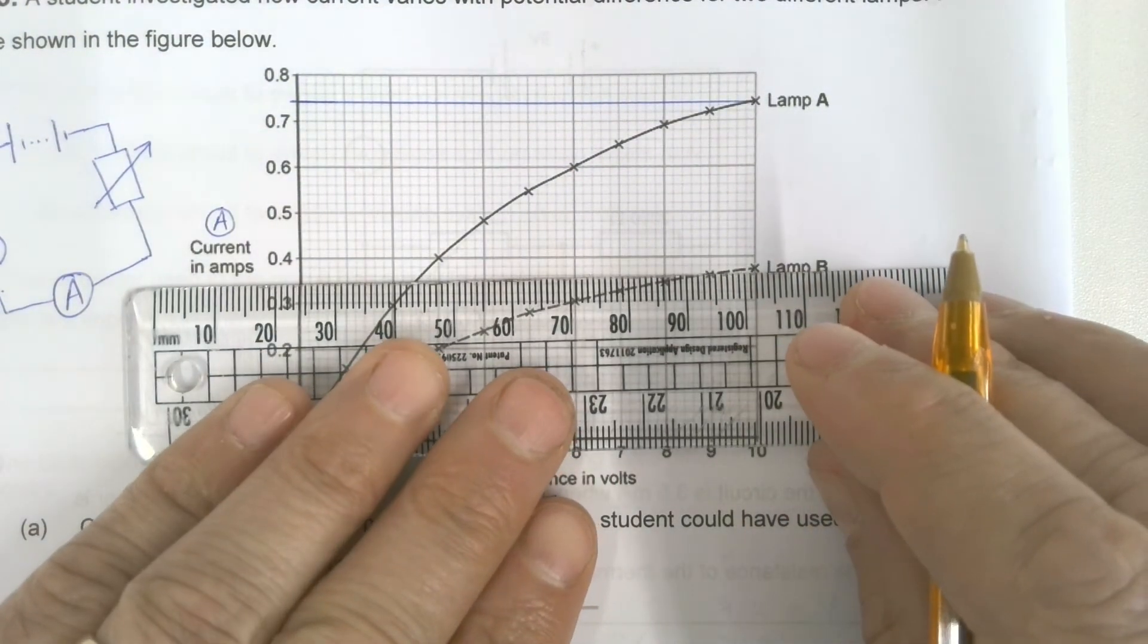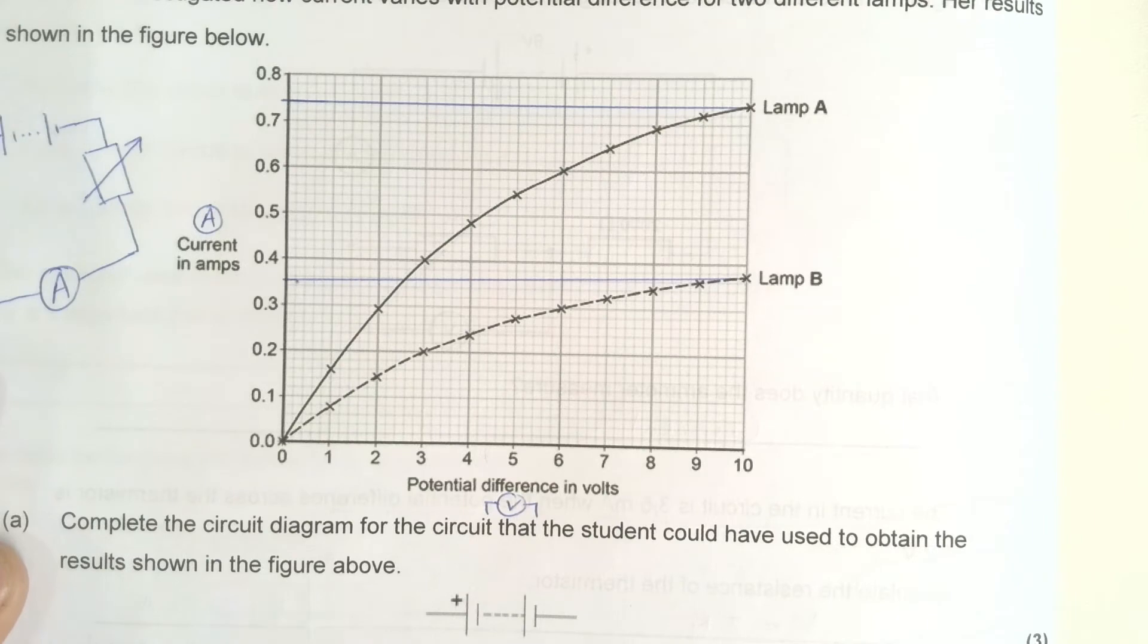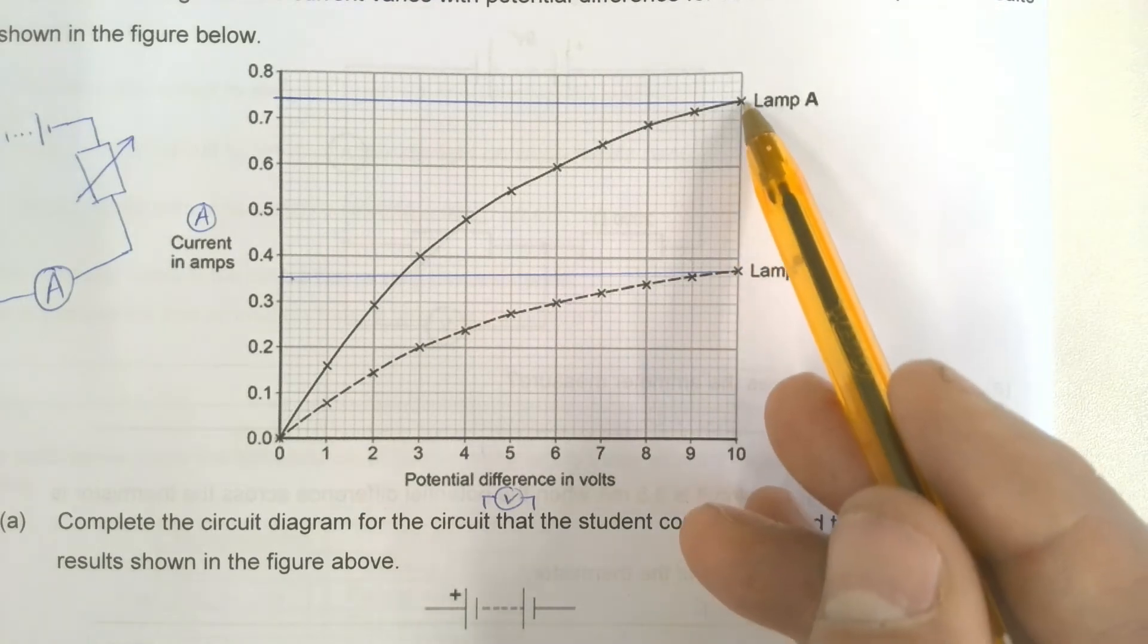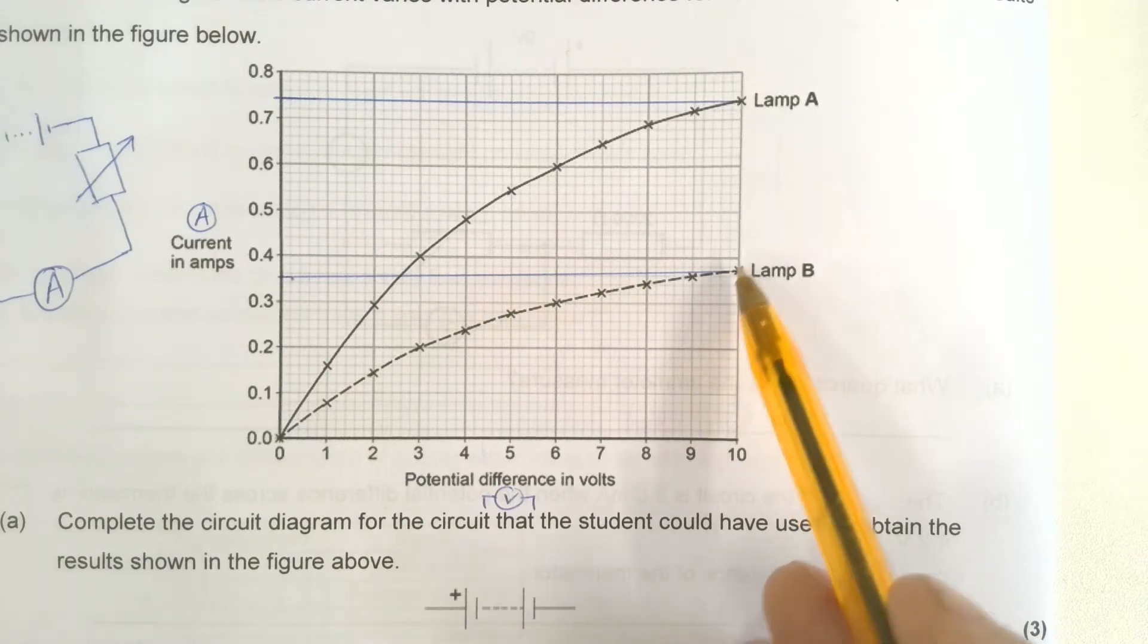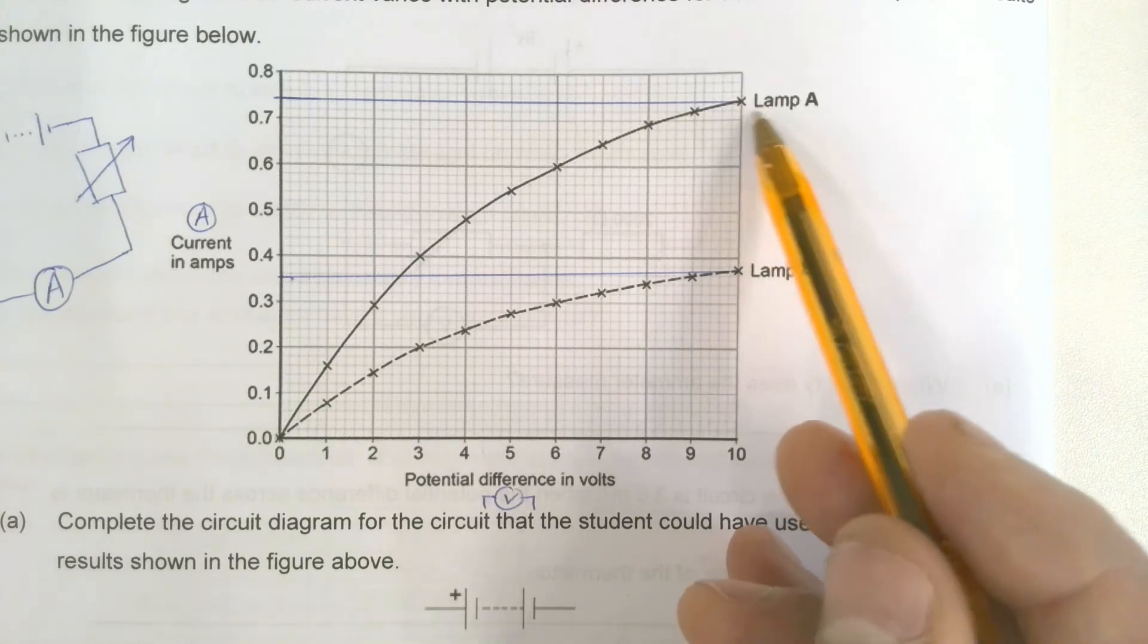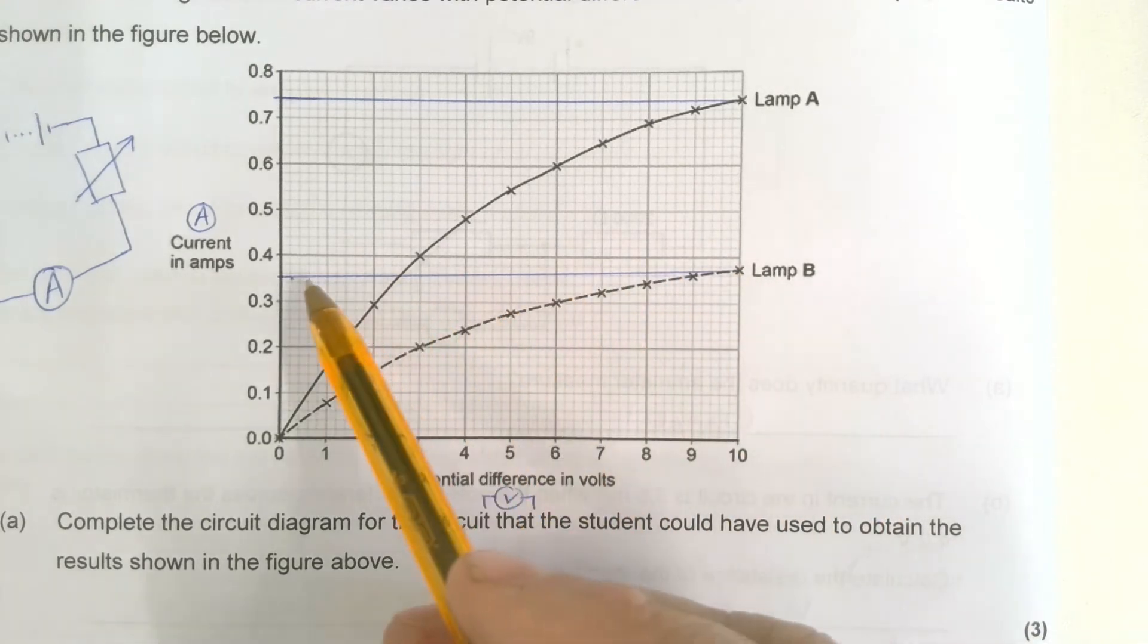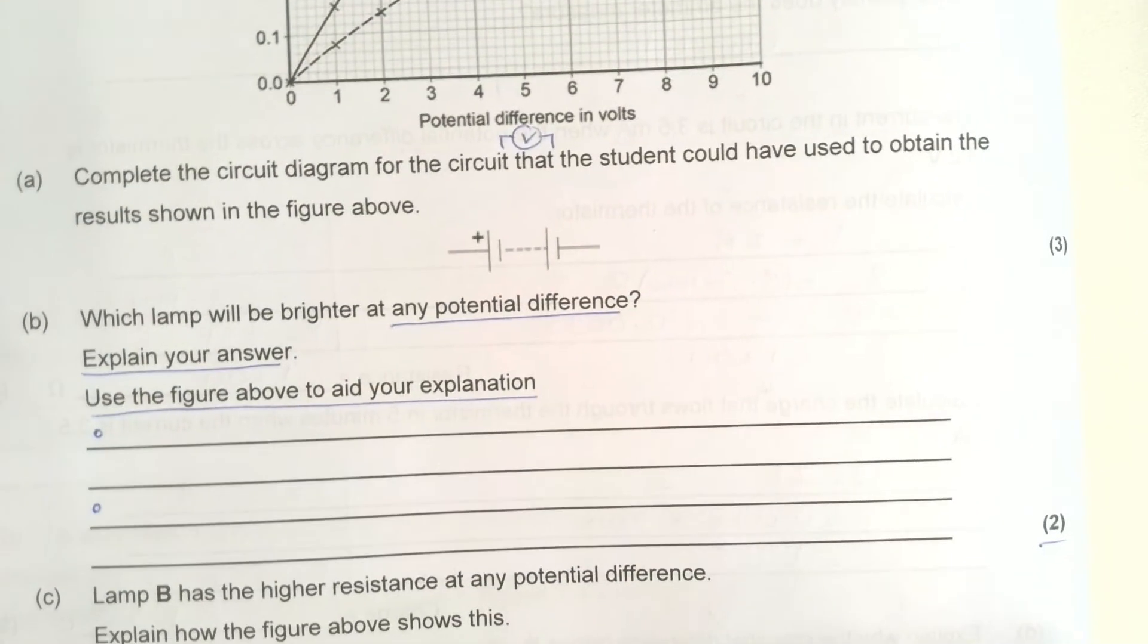Lamp A is always brighter because for the same potential difference, each coulomb on the charge is transferring 10 joules to each lamp. So one coulomb of charge, one gang of electrons, is transferring 10 joules to lamp B and lamp A at this particular potential difference. The difference is there are almost twice as many, in fact over twice as many, coulombs of charge coming to lamp A as lamp B. Each one's transferring 10 joules, but this is getting loads more. It's getting 0.74 compared to about 0.37. So it's going to be lamp A.